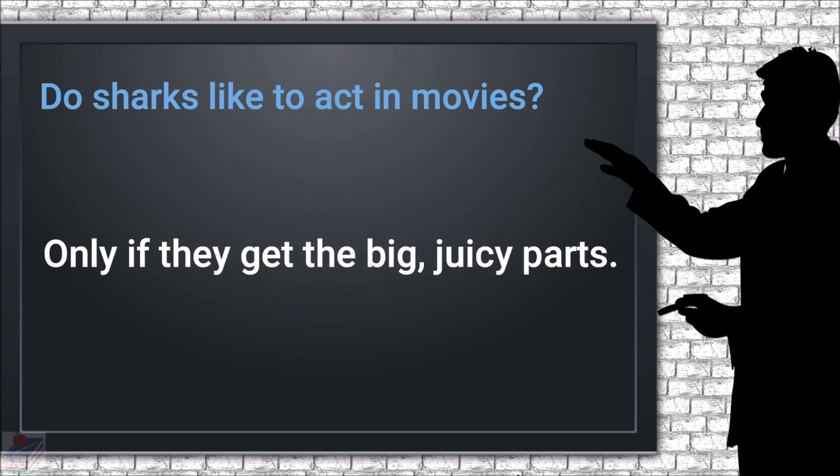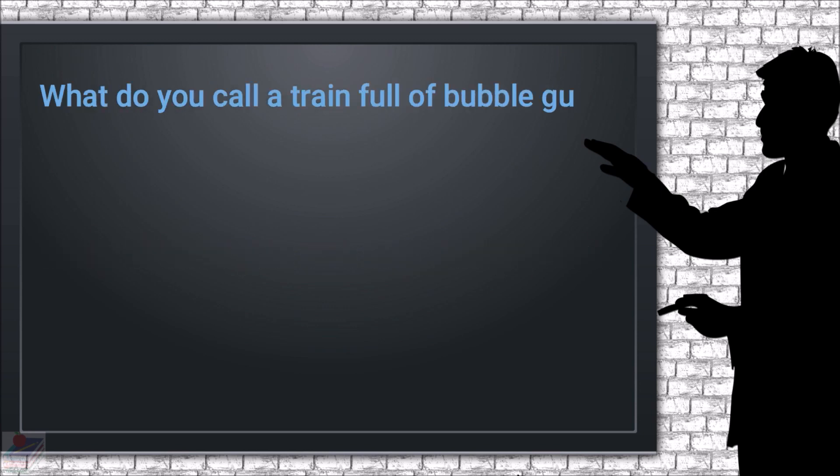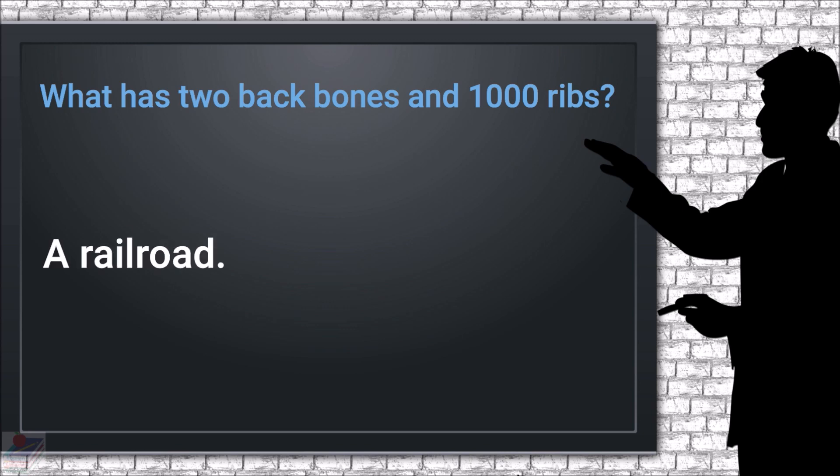What do you call a train full of bubblegum? A choo-choo train. What has two backbones and one thousand ribs? A railroad.